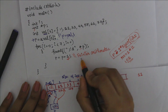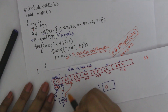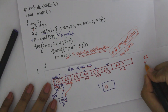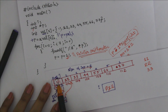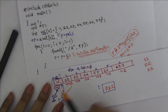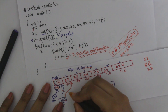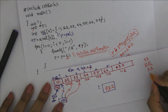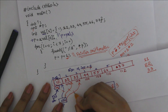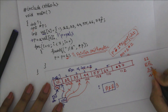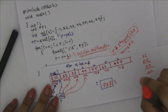I will explain pointer arithmetic. If you have the concept: starting at p, go to p plus 1, then p plus 2. The print output shows: the first value is 11, the second value is 22, the third value is 33, and the fourth value is 77. This will be our program output to verify.